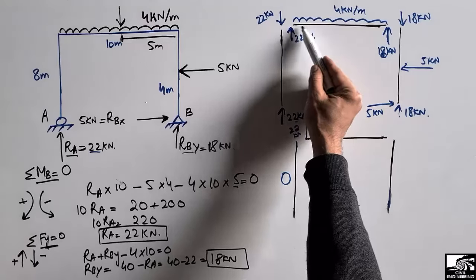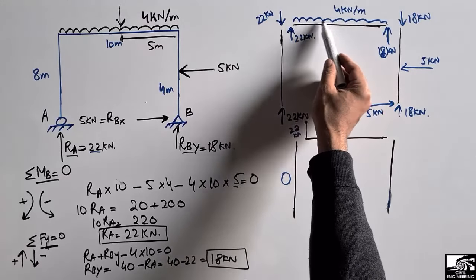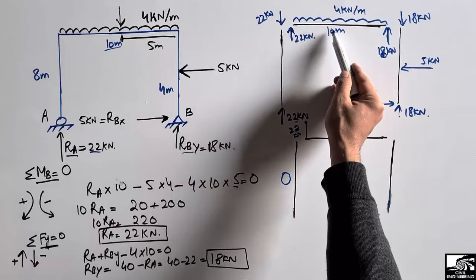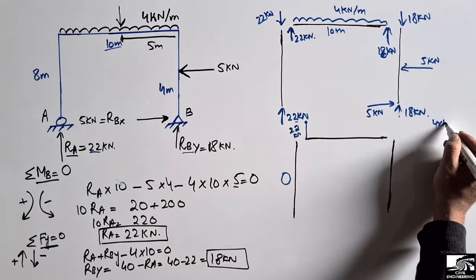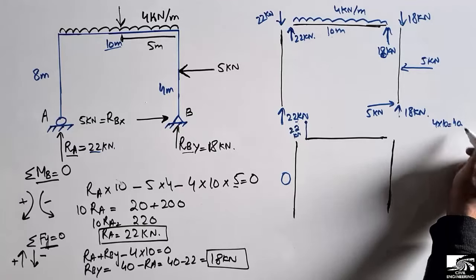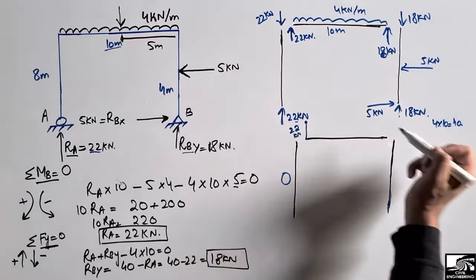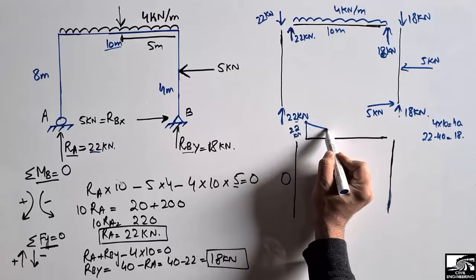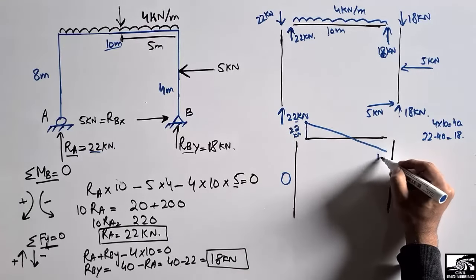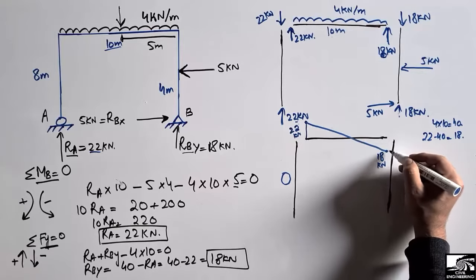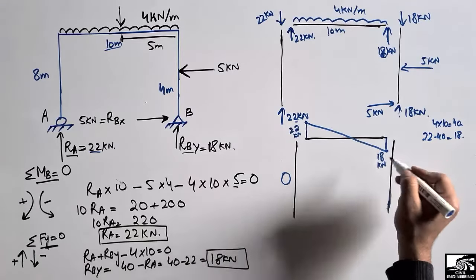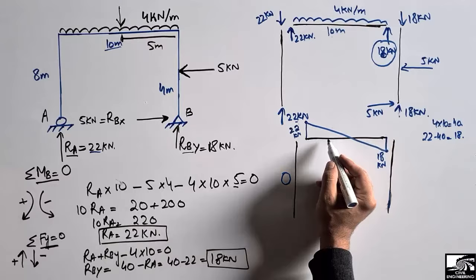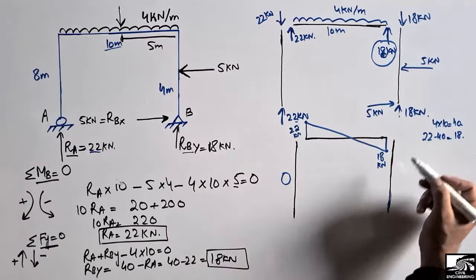For the beam, the uniformly distributed load of 4 kN/m acts downward over 10 meters, giving a total of 40 kN. Starting from 22 kN upward: 22 − 40 = −18 kN. So the shear force goes from +22 kN at one end to −18 kN at the other end of the beam, which matches the 18 kN reaction at B.